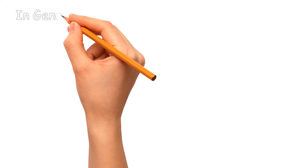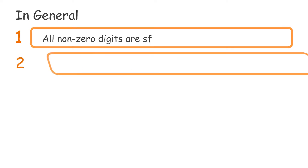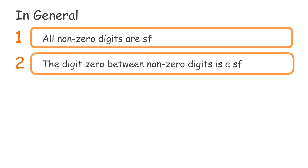In general, there are 5 points. First, all non-zero digits are significant figures. Second, the digit zero between non-zero digits is a significant figure.